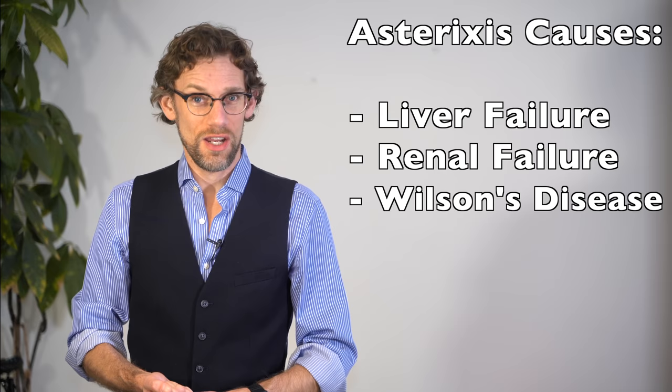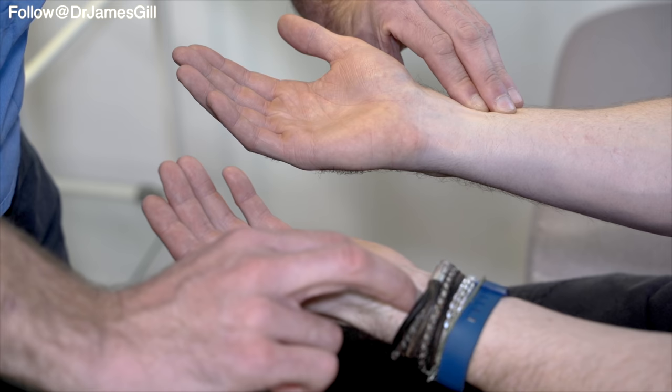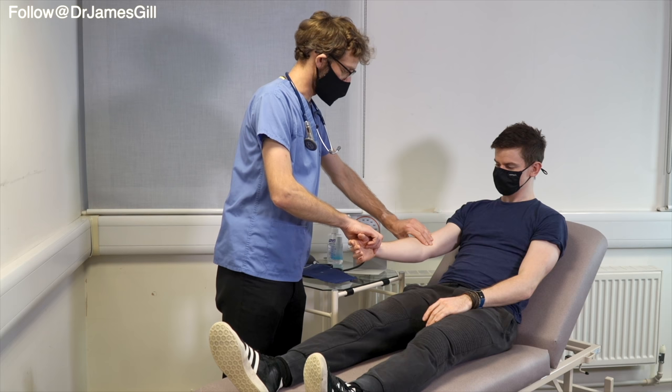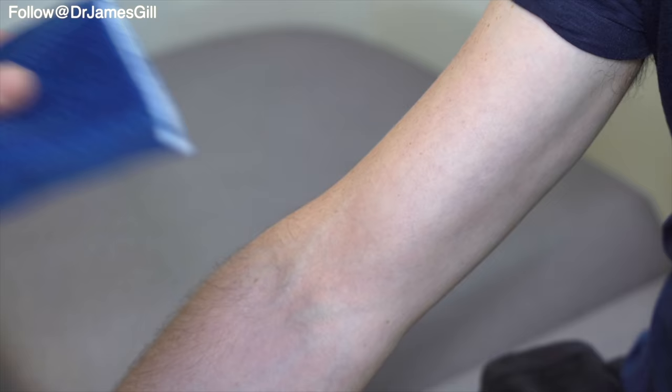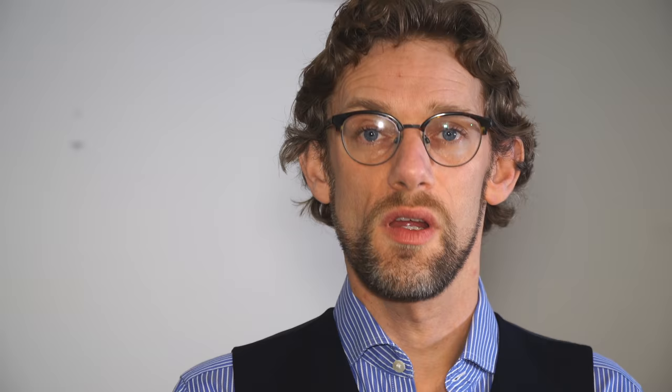After having looked at the hands we want to check the pulse both the rate and rhythm at the radius and then going up to the antecubital fossa to check the character. We'll also do the blood pressure which is particularly important in an abdominal examination as for example if you have hypoalbuminemia if you have low levels of protein that may mean that there is a reduction in oncotic pressure. What this means is that we can get fluid leaking from the vessels into the surrounding tissues meaning somebody can have low blood pressure as a result.